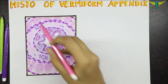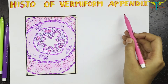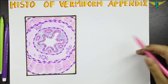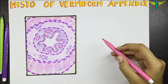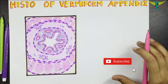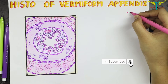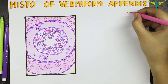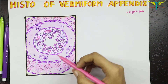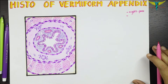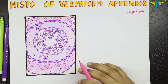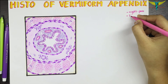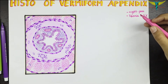In this video, let's learn about the histology of the vermiform appendix. The vermiform appendix is the narrowest part of the GIT. The structure of the colon and the vermiform appendix differ in the following ways: the crypts of the vermiform appendix are poorly formed, the longitudinal muscle coat is complete and equally thick all around, but the taenia coli are not present.